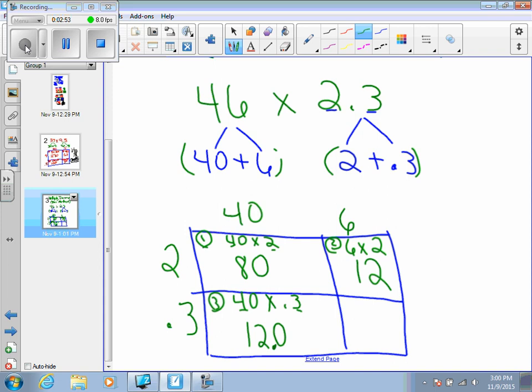Then for the fourth box, we're going to multiply 6 times 0.3. Again, pretend that the decimal is not there. What is 6 times 3? 18. And then you go back and place the decimal until there is one number behind the decimal. So that will give you 1.8.